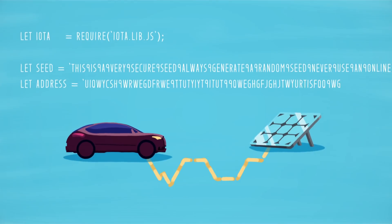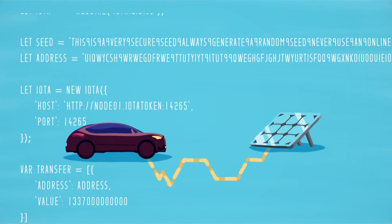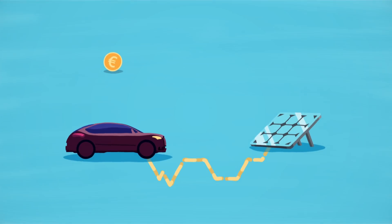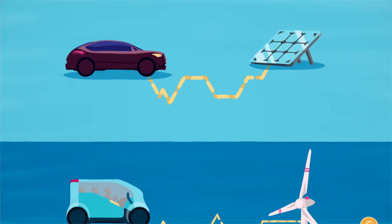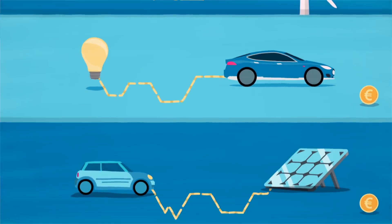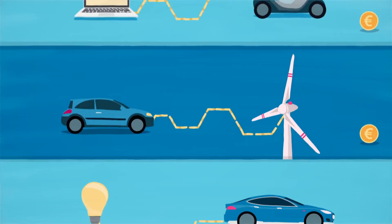This means that all kinds of devices have to start communicating with each other and there'll be a need to make or receive payments for their services. That may sound complicated but in practice people won't even notice the devices are at work.